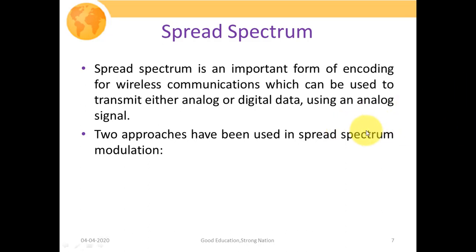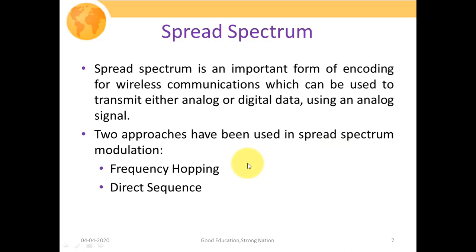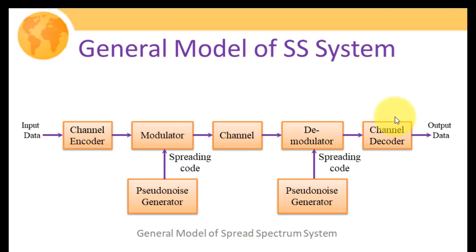Two approaches have been used in spread spectrum modulation. Number one is frequency hopping and the second is direct sequence spread spectrum. In frequency hopping, we change our carrier frequency periodically, so after the complete encoding process the signal will contain a much wider bandwidth. In direct sequence spread spectrum, the spreading is performed with the help of certain code words or sequences. We will discuss these two processes in greater detail in upcoming lectures.